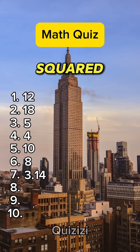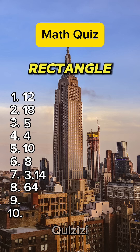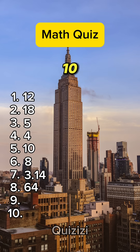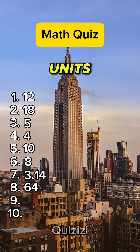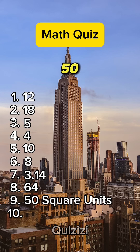What is 8 squared? 64. If a rectangle has a length of 10 units and a width of 5 units, what is its area? 50 square units.